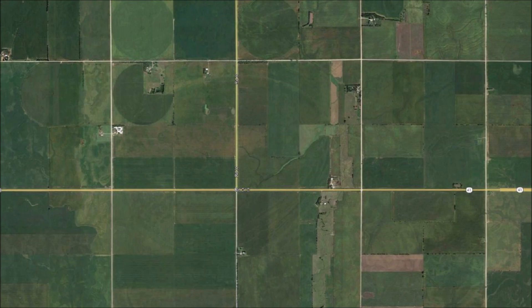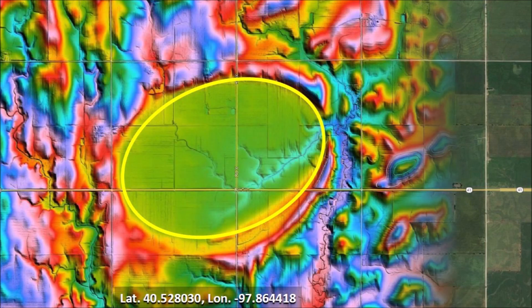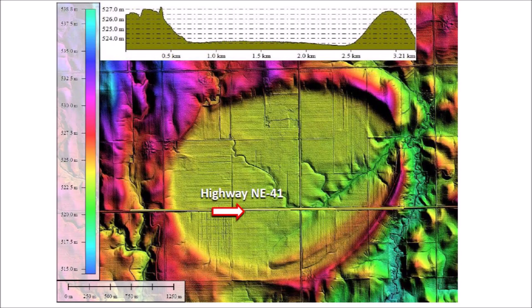We can only see Nebraska's system of roads that divides the land into a grid of one-mile squares. We know that the bay is there, but without a LiDAR image we cannot see it. The LiDAR images provided by Michael Davias are very valuable for studying surface features and they integrate seamlessly with Google Earth.